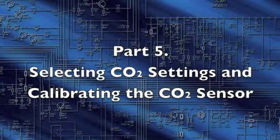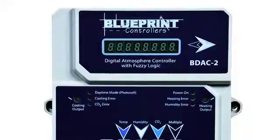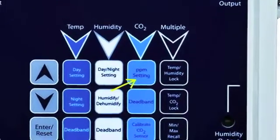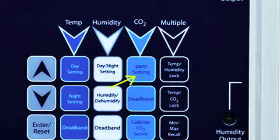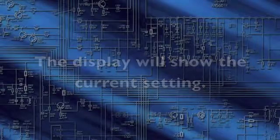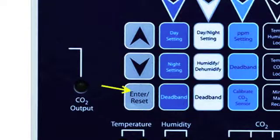Selecting CO2 Settings. To select the CO2 PPM Setpoint, press the PPM Setting button. The current setting will be displayed. Use the up and down arrow buttons to adjust the setting. Press Enter Reset to accept the new setting.